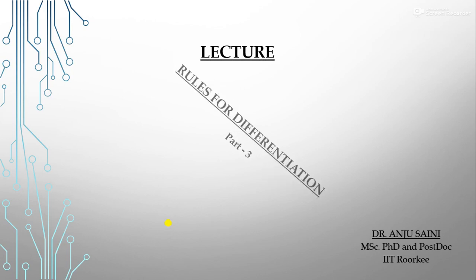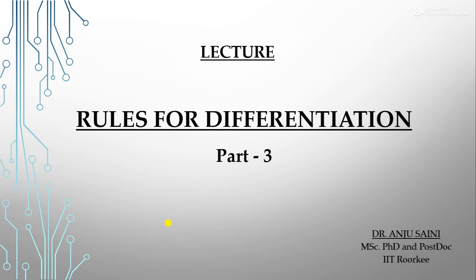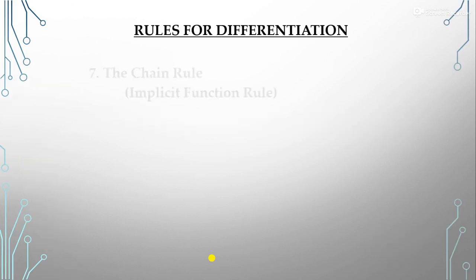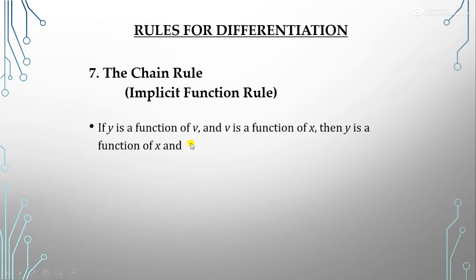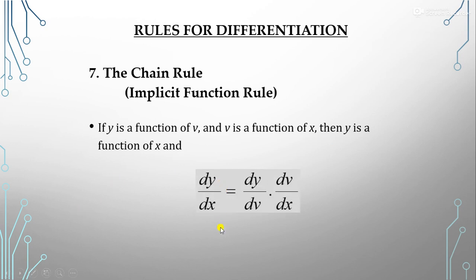Welcome to the next lecture on differentiation. We will continue with the rules for differentiation. Here we discuss the chain rule, which is also called the implicit function rule. Suppose y is a function of v and v is a function of x, then y is a function of x. We find dy/dx, which equals dy/dv multiplied by dv/dx.